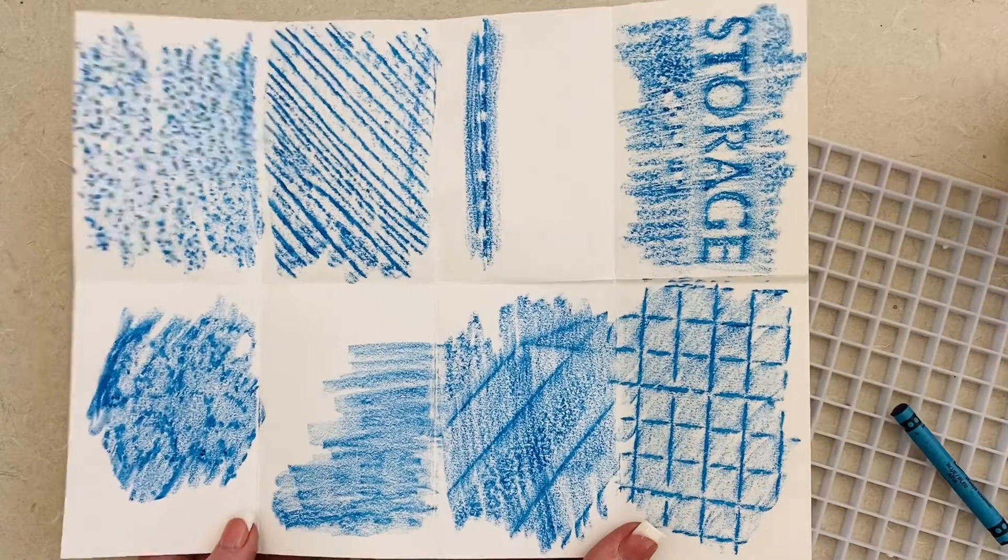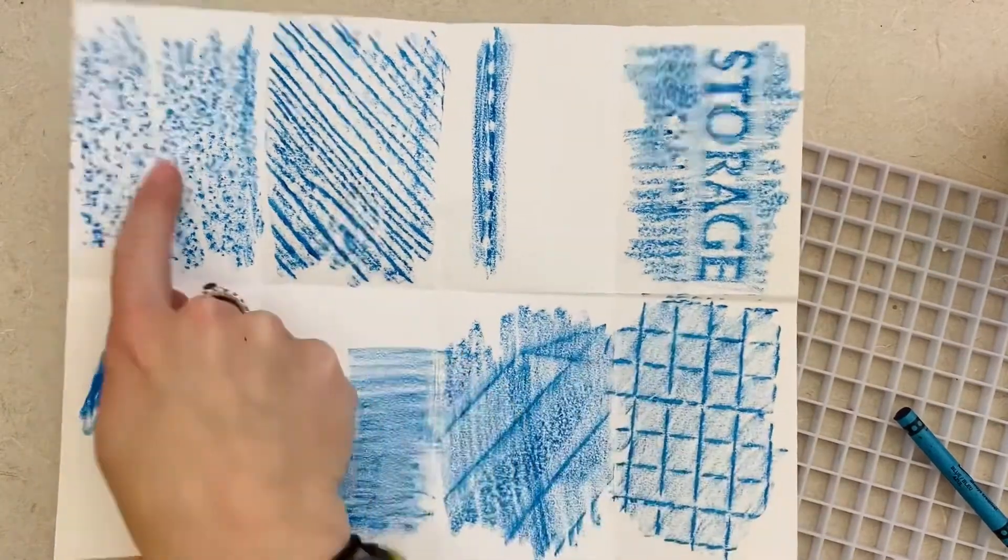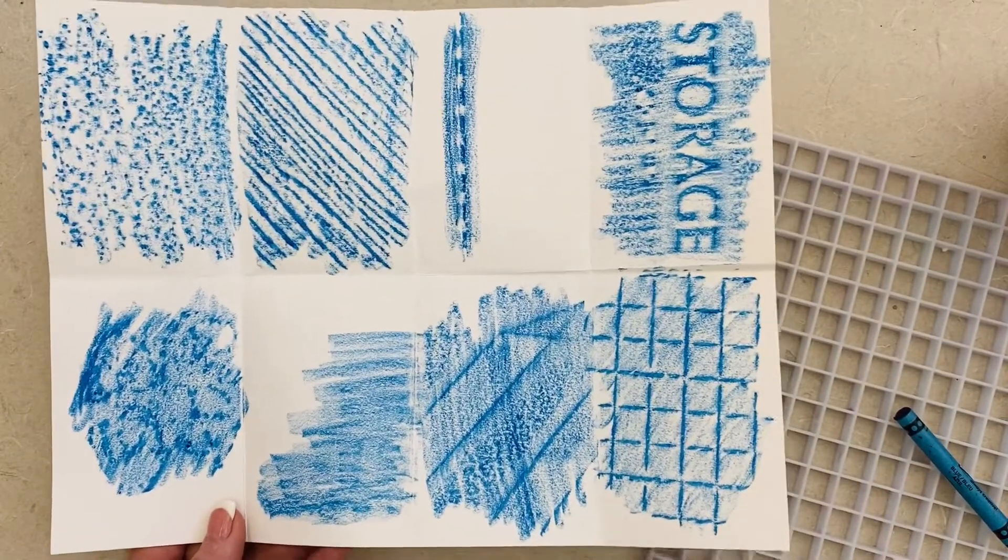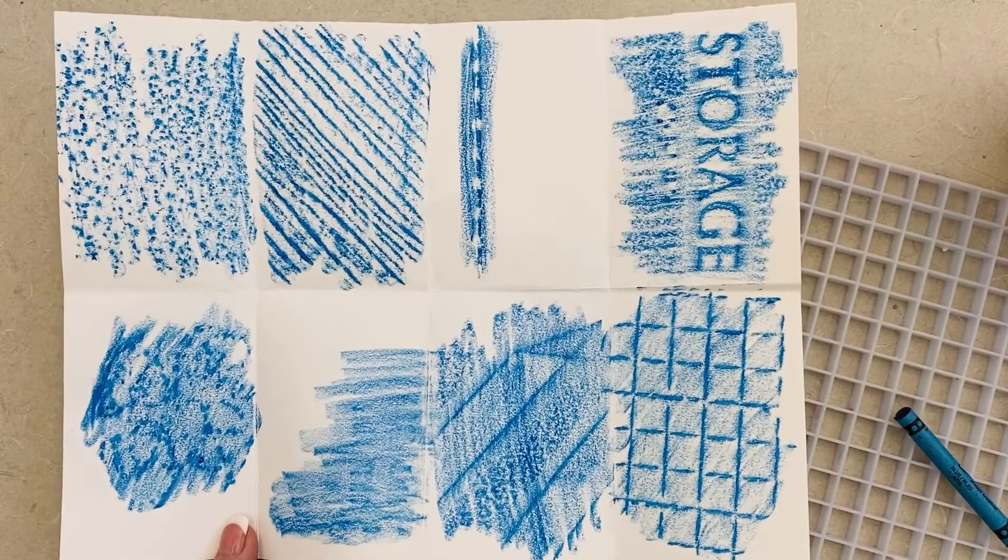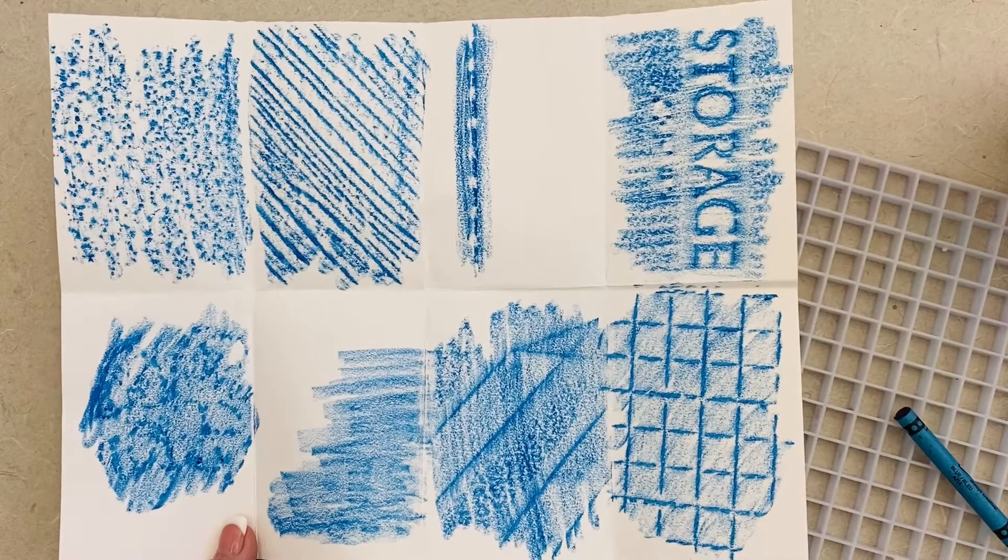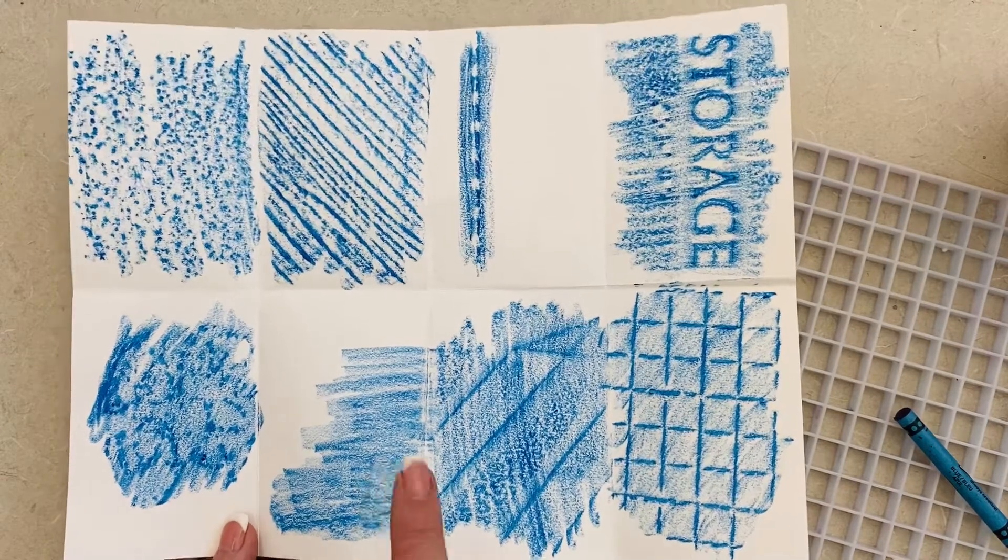Now some of them might show up really well and some of them might not show up as well when you do your rubbing and that's okay. So I want you to try to find eight different textures, see what works best, see what has a lot of texture, what might not show up as well.